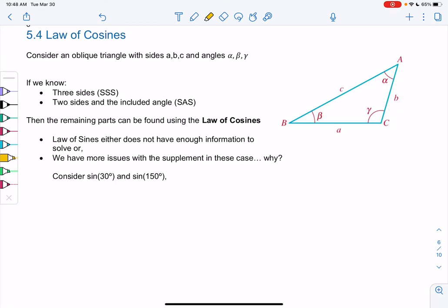We're going to consider an oblique triangle, which just means we don't have any right angles, just like Law of Sines. These are the special cases when we don't have right angles.